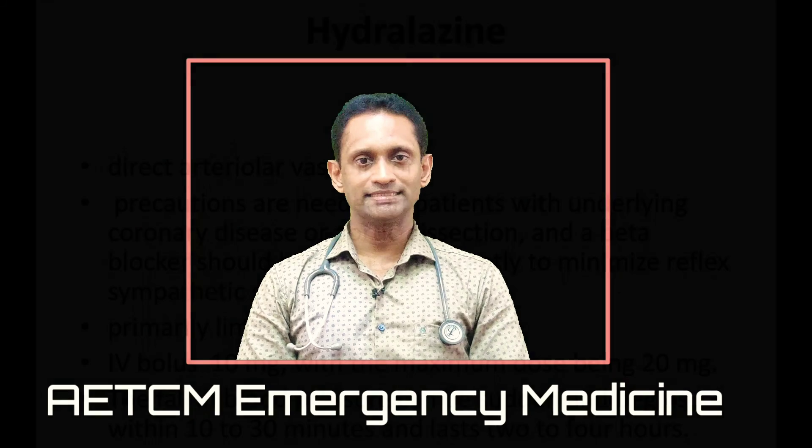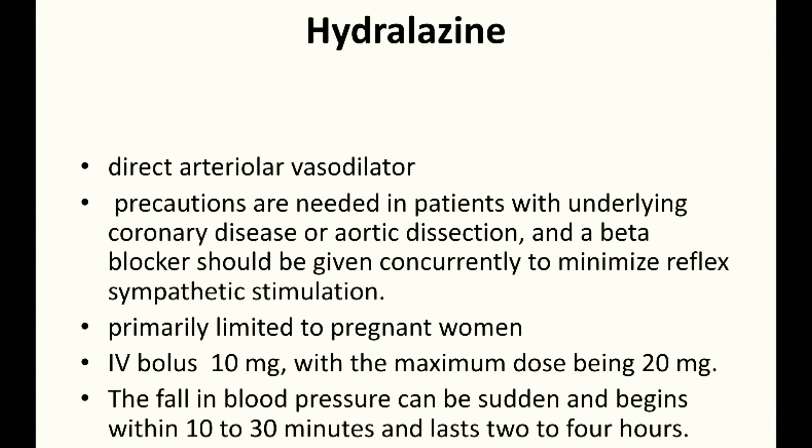Hydralazine is a direct arteriolar vasodilator whose use is now primarily limited to pregnant women. It is given as an IV bolus of 10 mg with a maximum dose of 20 mg. The fall in blood pressure can be sudden but usually begins within 10 to 30 minutes and lasts for 2 to 4 hours. Precautions are needed in patients with coronary artery disease or aortic dissection, and a beta blocker should ideally be given concurrently to minimize reflex sympathetic stimulation.